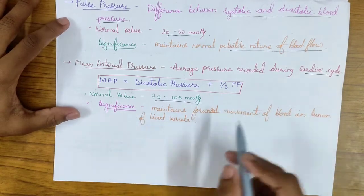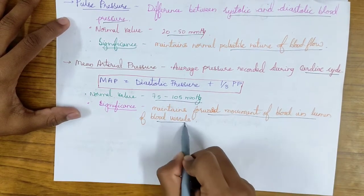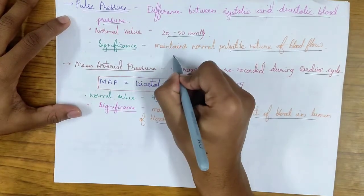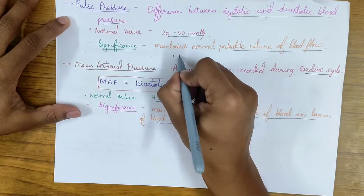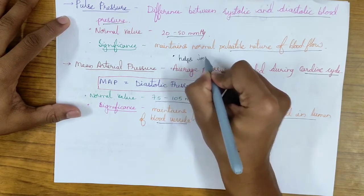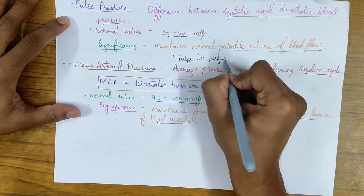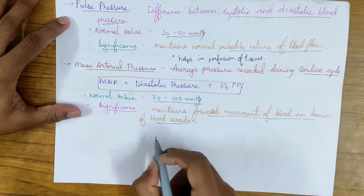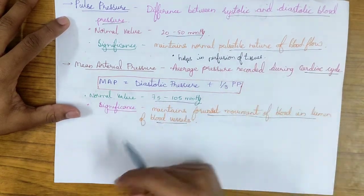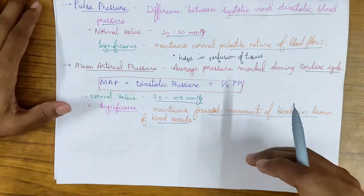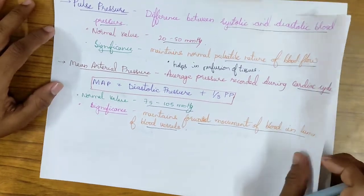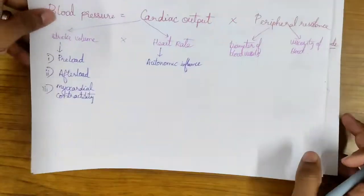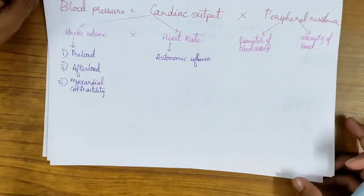The significance of mean arterial pressure is that it maintains the forward movement of blood in the lumen of the blood vessels. Both pulse pressure and mean arterial pressure help blood in perfusing the tissues. Mean arterial pressure also helps in tissue perfusion by maintaining forward movement of blood in the lumen of blood vessels. These are the important terms which can be asked in this blood pressure topic.